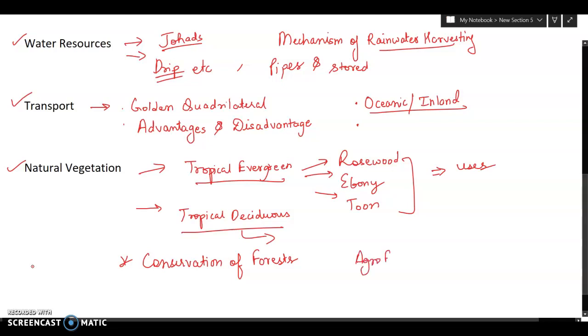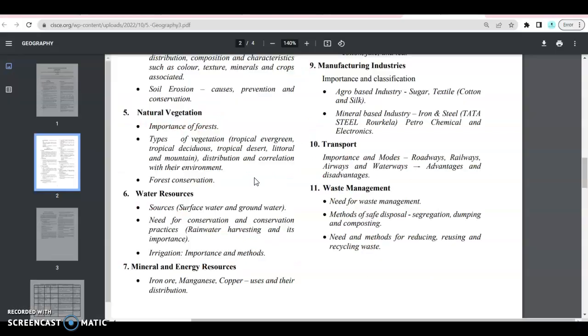You can also attempt an extra question, and that can be done from waste management. If you just read waste management twice, you will be able to know what other processes are involved: segregation, dumping, composting, reduce, reuse, recycle. These are very very basic and easy concepts to understand.